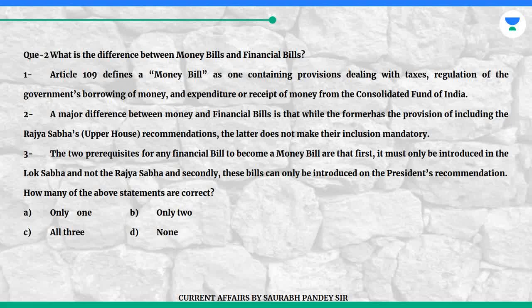How many of the above statements are correct? A. Only one. B. Only two. C. All three. D. None.